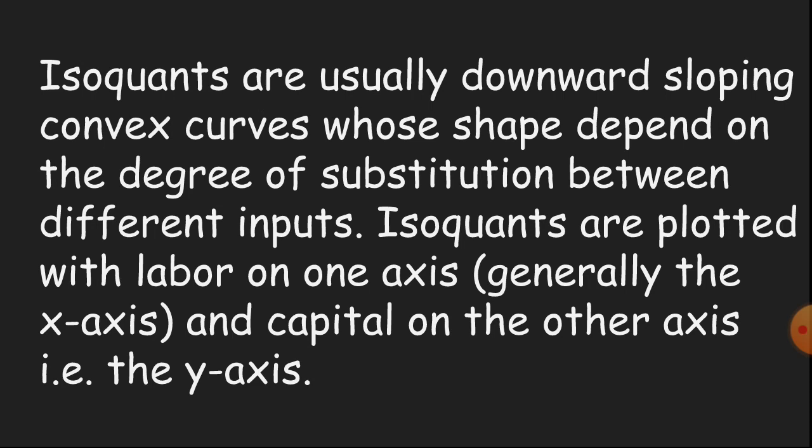Isoquants are usually downward sloping convex curves whose shape depends upon the degree of substitution between the different inputs. The isoquants are plotted with labor on one axis — generally the x-axis — and capital on the other axis, that is the y-axis.